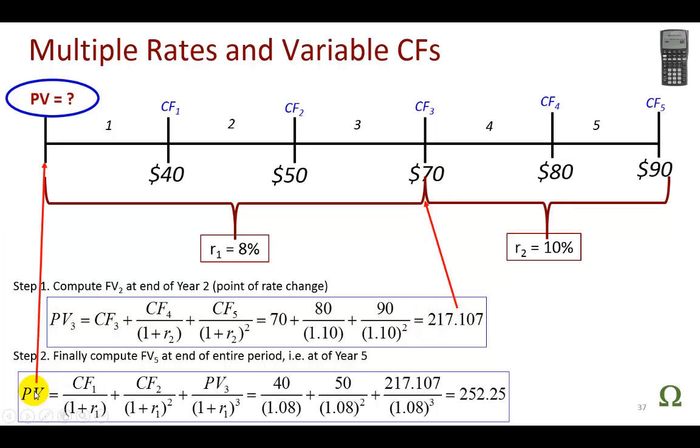So then, separately, we come down to the present right here, where you see this basic arrow. The first cash flow, which is this 40, will be discounted over one period. Second one, 50, over two periods. And finally, the present value at the end of year three, which we calculated earlier, 217 and change, is going to be discounted over three periods at 8%. So all of that added up will give you 252.25.